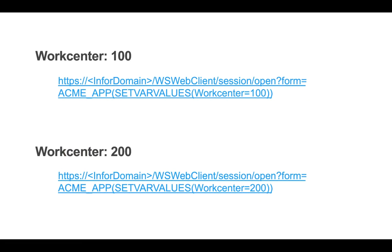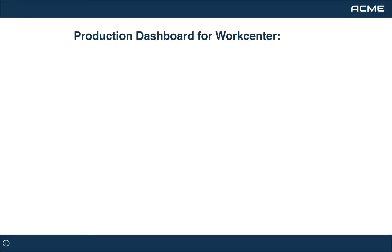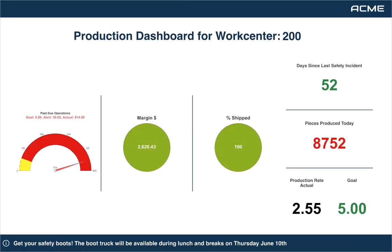The same URL that is used to access the application can also feed in variable values to filter by work center. Using the set var values parameter in the URL, you can add in work center specific information. If I click on the link that is setting the work center to 200, you will notice that my dashboard now shows information relating to work center 200. You can also use that same parameter to feed in values into your KPIs.